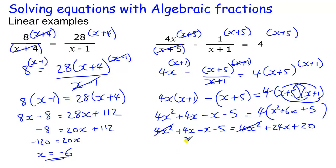We've got 4x minus x, which is 3x, minus 5, equals 24x, plus 20, so it's just a linear equation, grade D equation in fact.